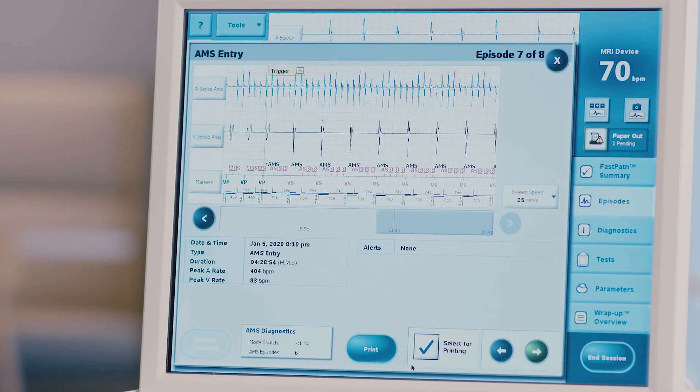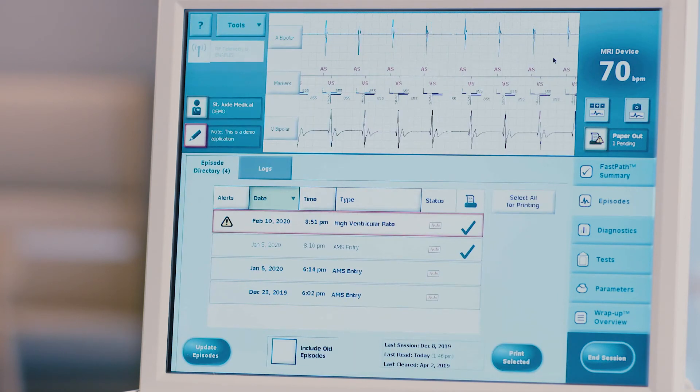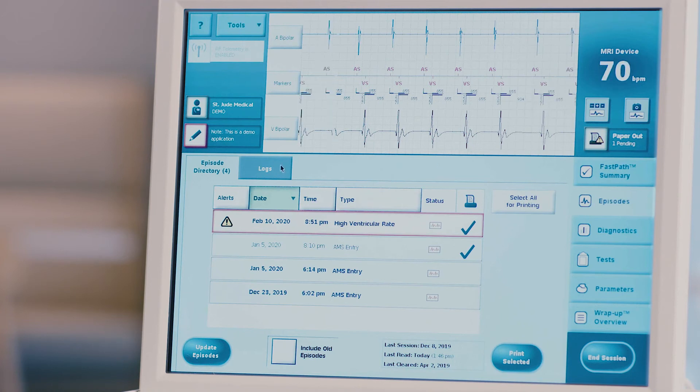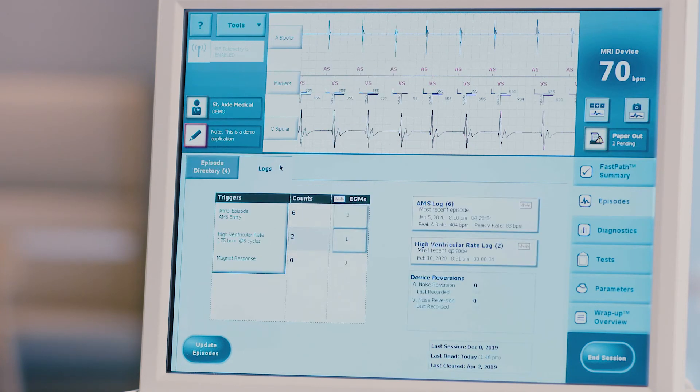Note that certain episodes will be pre-selected for printing. Press X to close the screen. Repeat these steps for all relevant episodes listed. Choose the logs tab at the top of the screen to review the total counts for each episode trigger type.